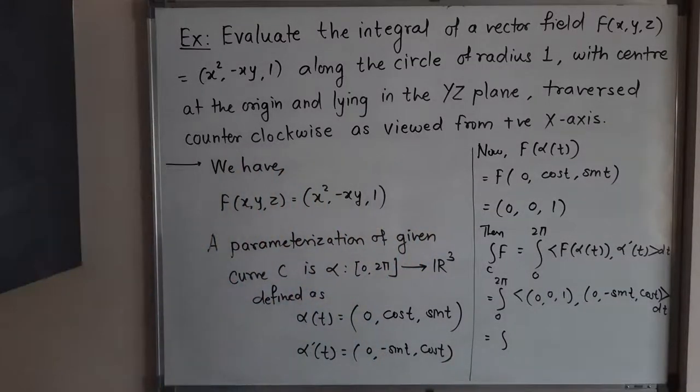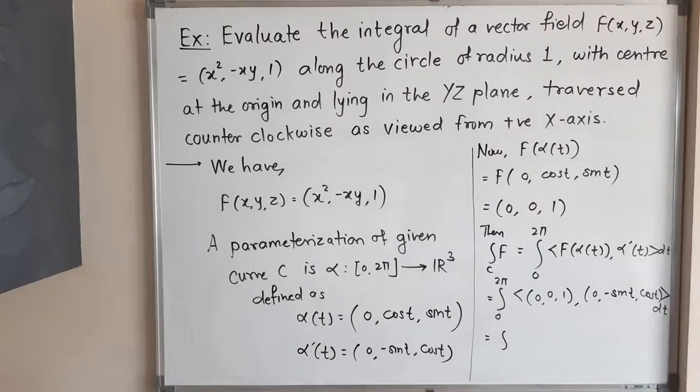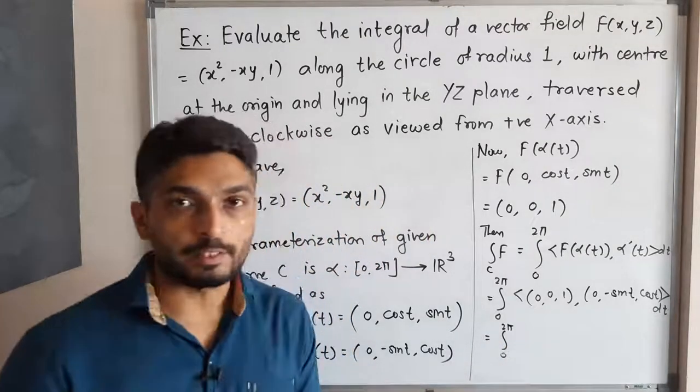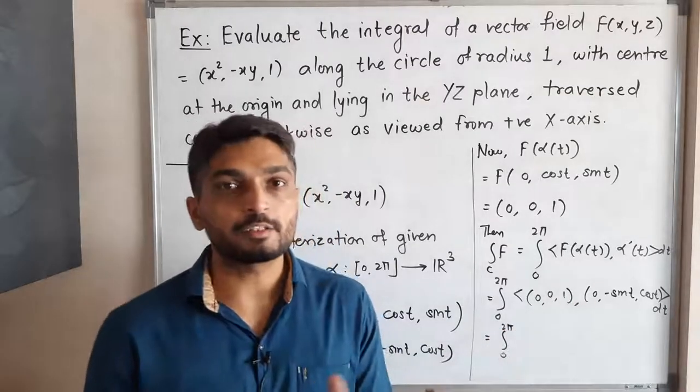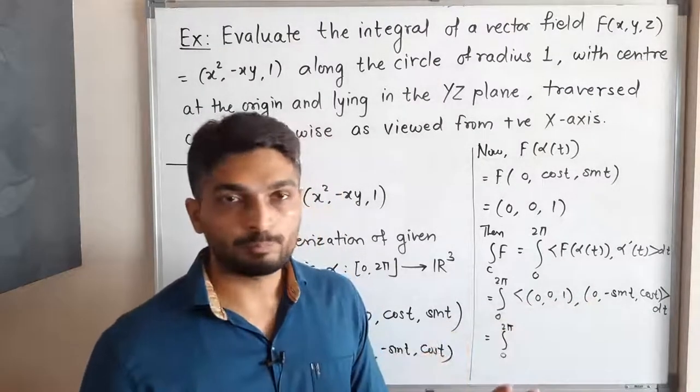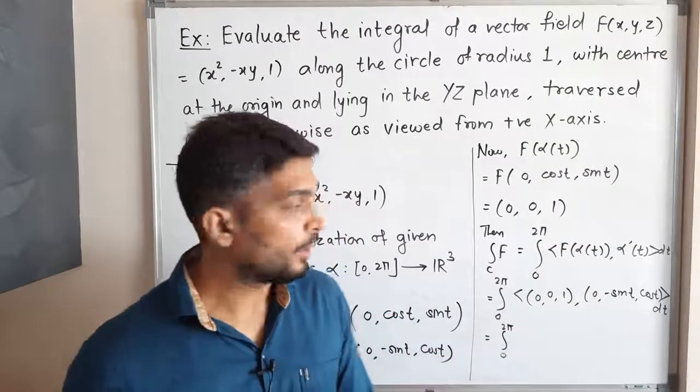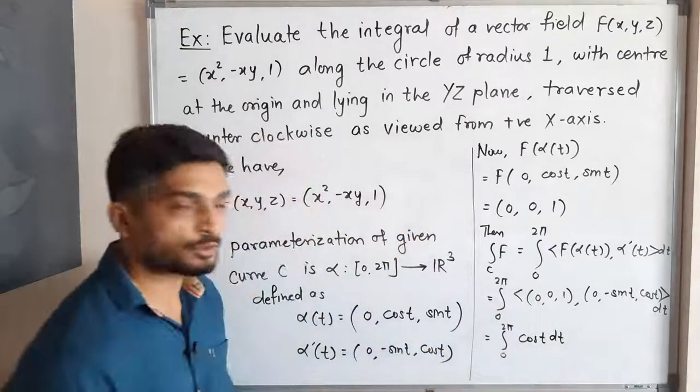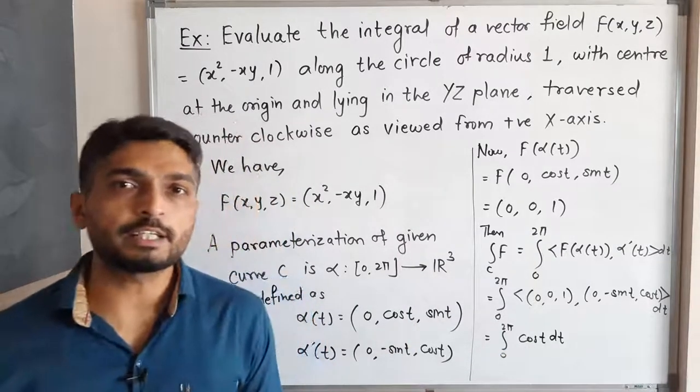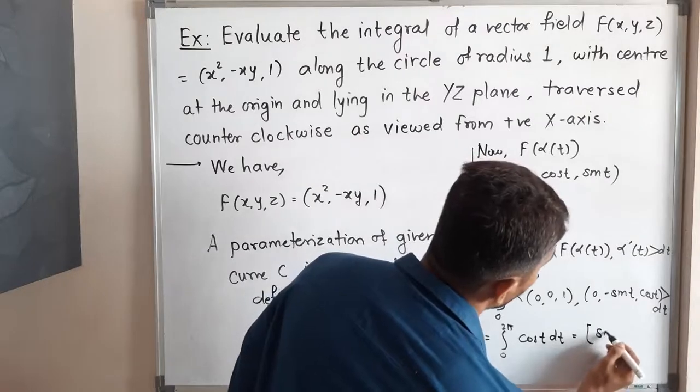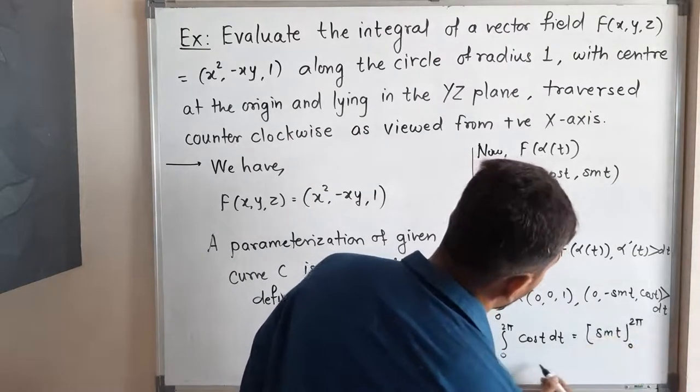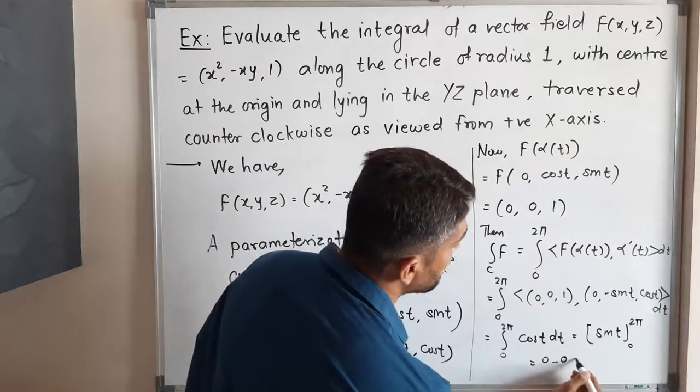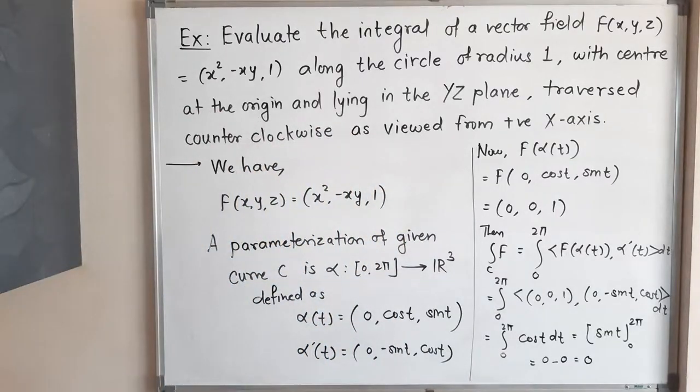So you know that how to find value of inner product. So integration 0 to 2π. You know well how to find inner product: first component into first, second into second, third into third. 0 into 0 is 0, plus 0 into -sin t is 0, plus 1 into cos t. We will have simply cos t dt. So first two are 0, that's why simply we got here cos t. What is integration of cos t? It is sin t. So let me mention here sin t with limit 0 to 2π. Now we will put upper limit: sin 2π is 0. If I put lower limit: sin 0 is 0. So the final answer is also 0. So 0 is our required answer.